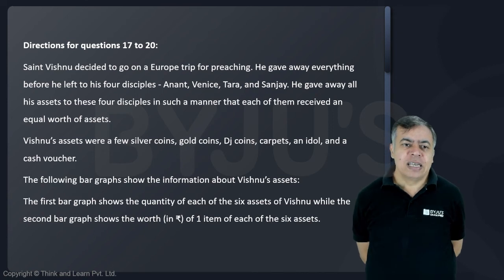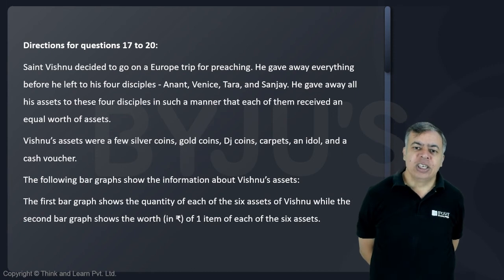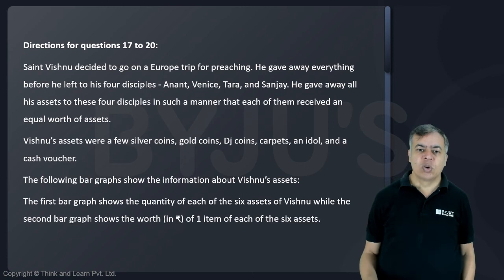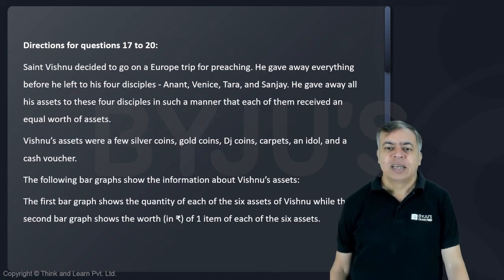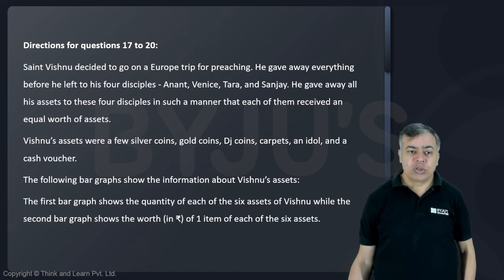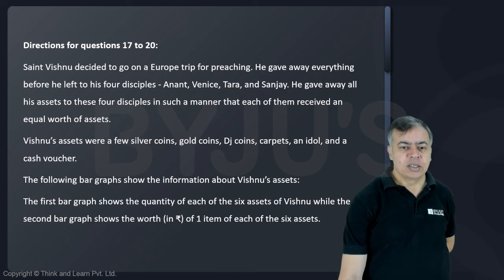He gave away all his assets to these four disciples in such a manner that each of them received an equal worth of assets. Vishnu's assets were a few silver coins, gold coins, DJ coins, carpets, an idol, and a cash voucher. The bar graph shows the quantity of each item, while the second bar graph shows the worth of one item of each type.